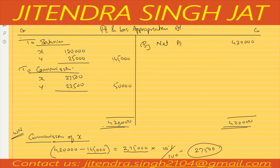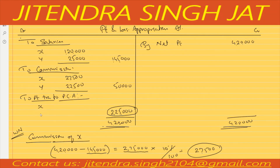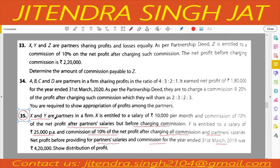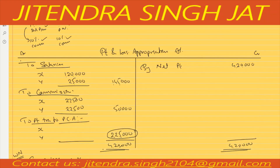Total deductions: salaries 1,45,000 + commissions (27,500 + 22,500) = 1,95,000. Remaining profit: 4,20,000 − 1,95,000 = 2,25,000. This profit is distributed to partners X and Y. The ratio is not given in the question, so it is distributed equally: 2,25,000 ÷ 2 = 1,12,500 each.